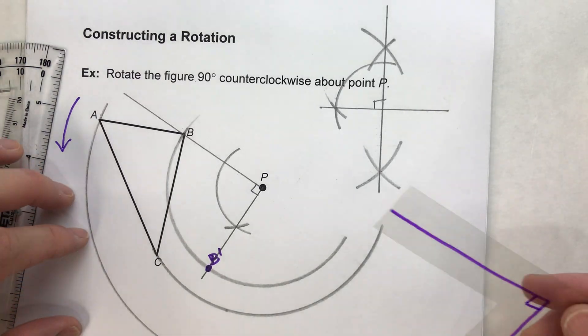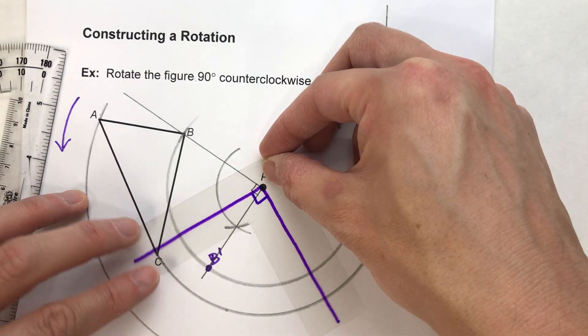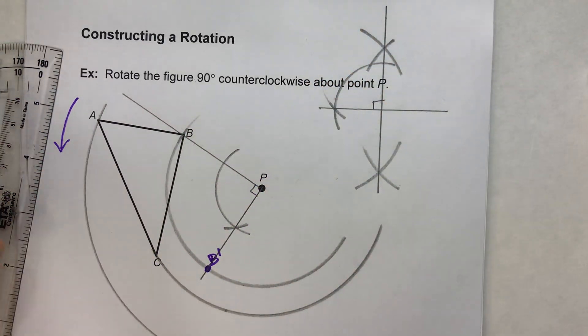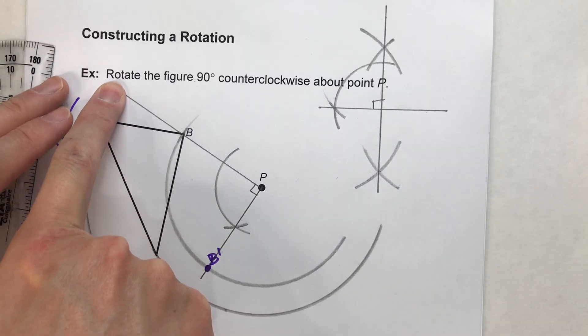Now I can just repeat that same thing for C and I can repeat the same thing for A. But there is a faster way to do it. And it all comes down to what you know about rotations.